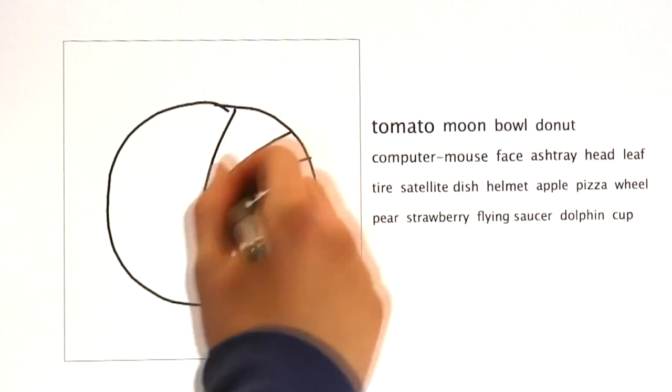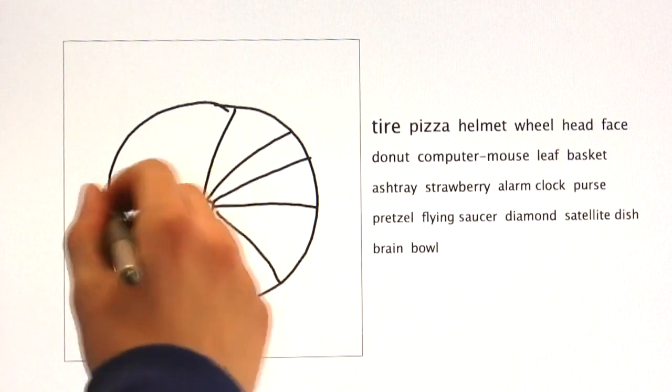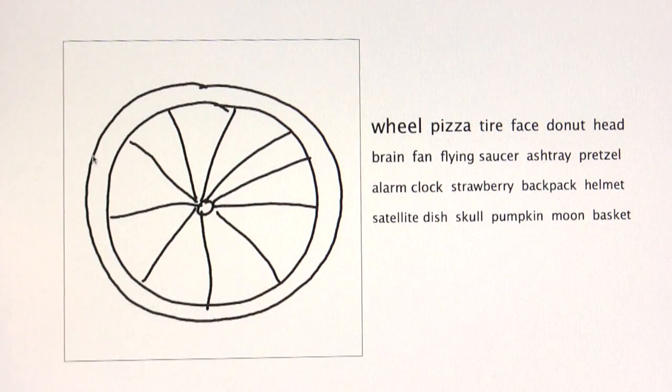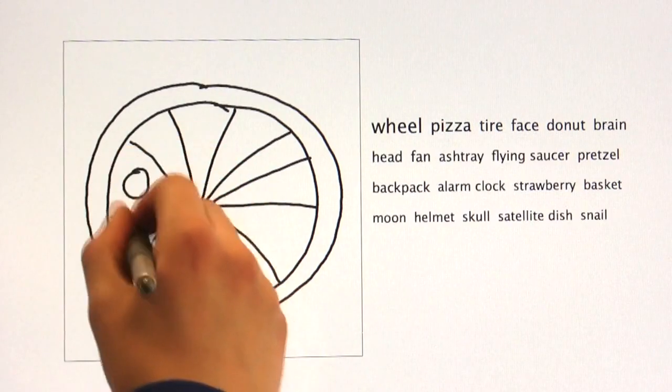Some object categories actually look quite similar when sketched. In that case, additional detail is crucial to recognize the desired category, both for the computer and for humans.